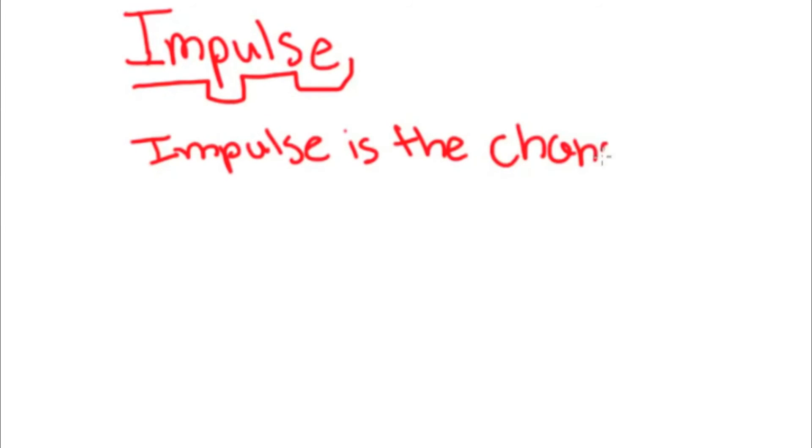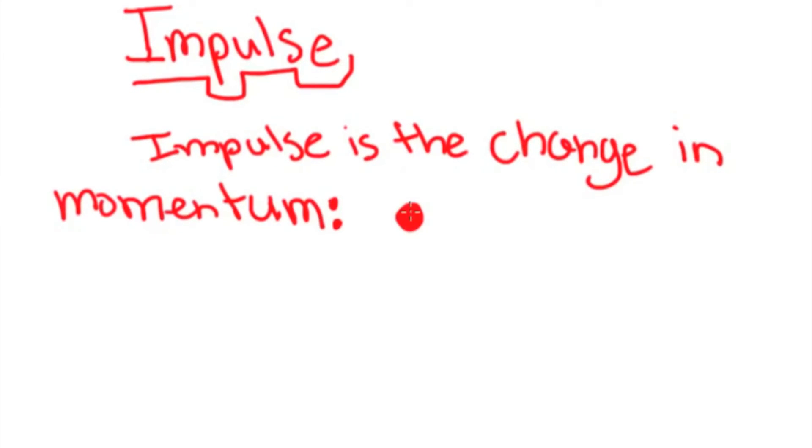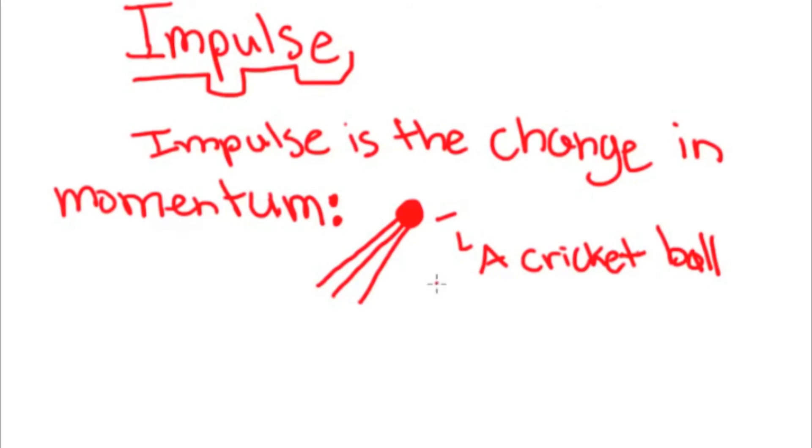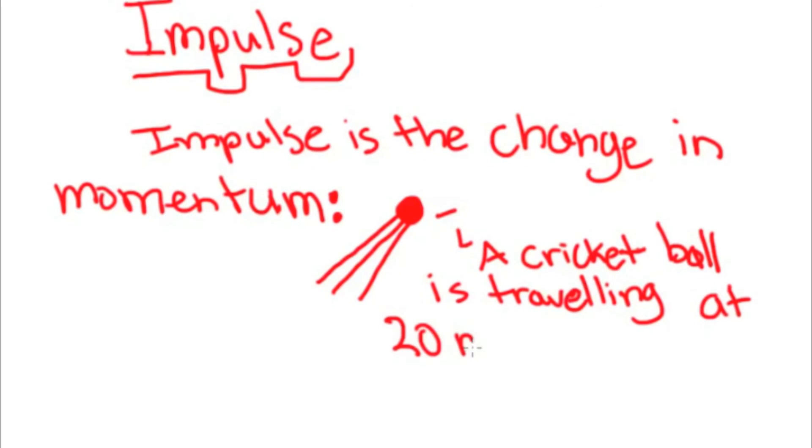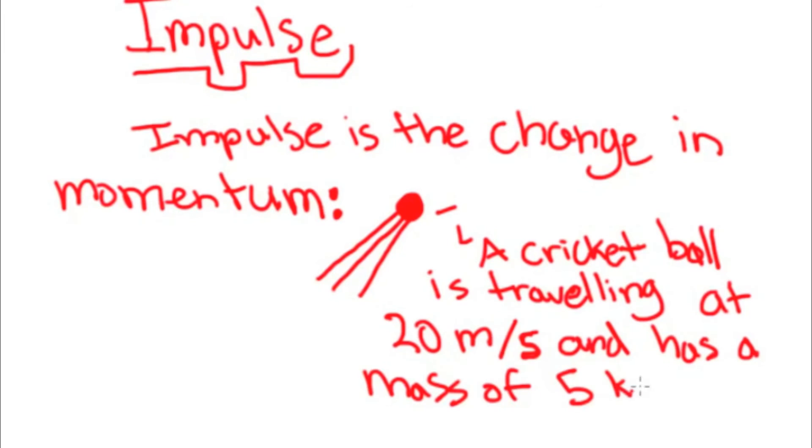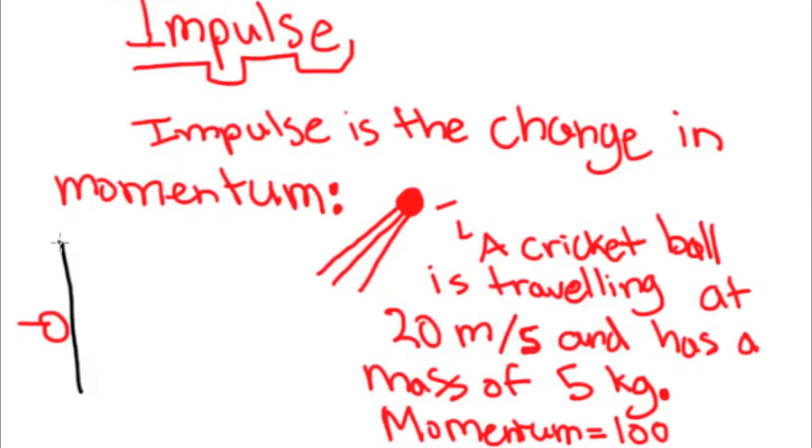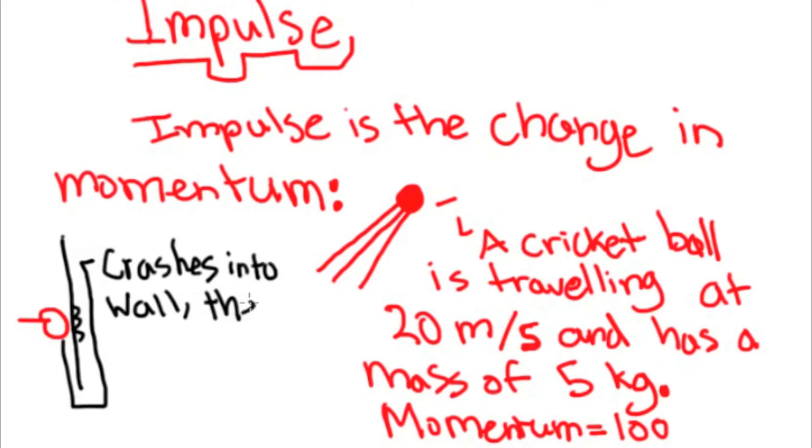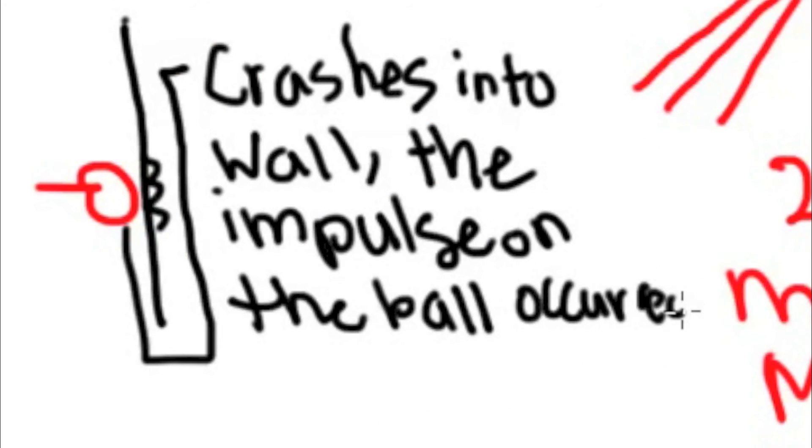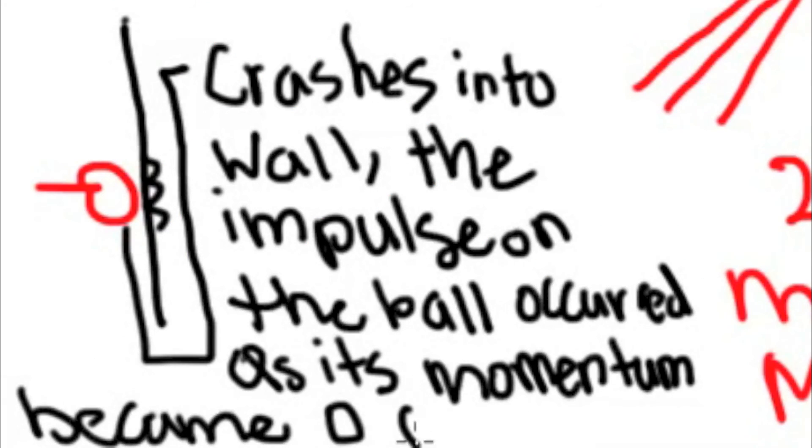Impulse is the change in momentum. For example, let's say a cricket ball is flying through the air and it is traveling at 20 meters per second and has a mass of 5 kilograms. The momentum would be 100. But let's say the ball crashed into the wall and it just stopped. Then the momentum would be 0 because the velocity would be 0 and 0 times 5 is 0.